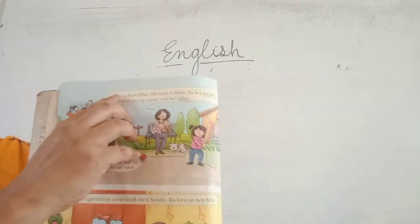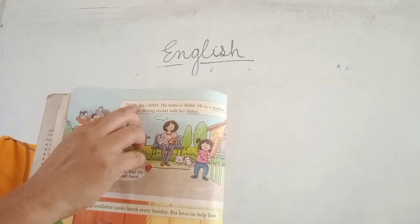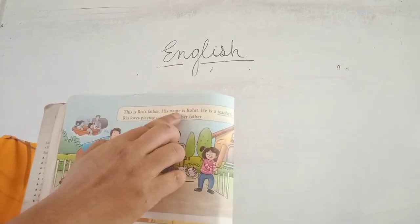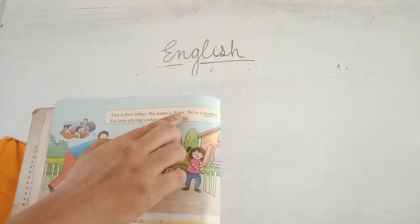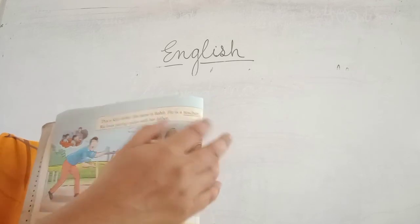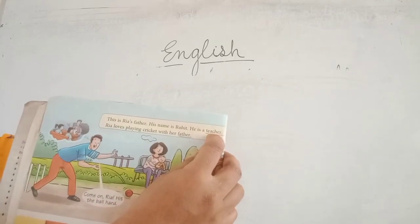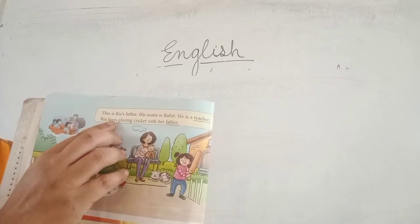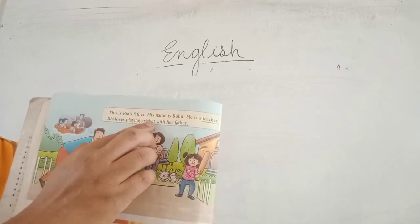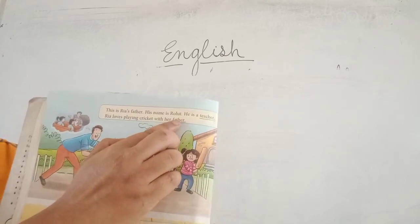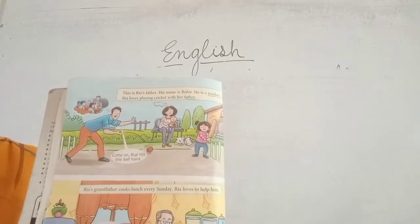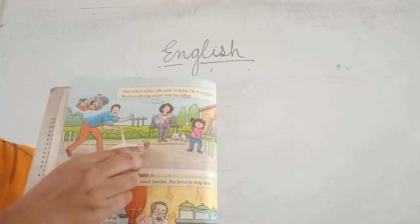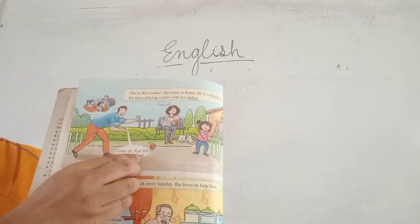In this picture we have seen that Ria's father is playing cricket. Now we will read the line. This is Ria's father. His name is Rohit. He is a teacher. Ria loves playing cricket with her father. Come on Ria! Hit the ball hard.